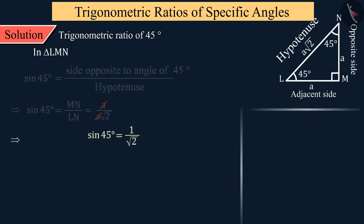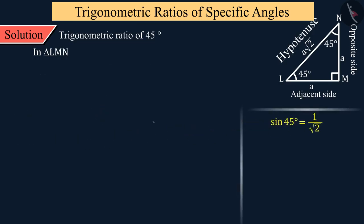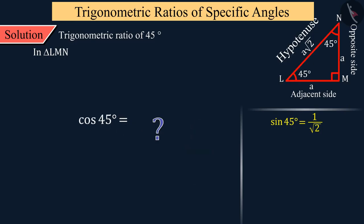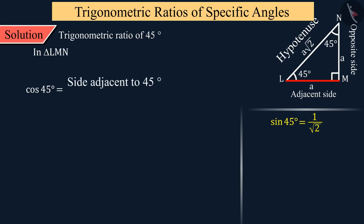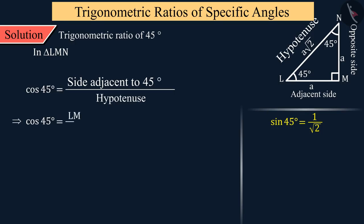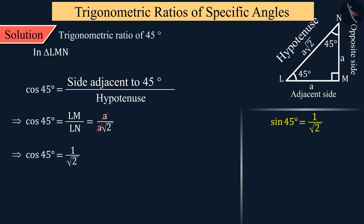Can you tell me what will be the value of cos 45 degrees? For this, find the ratio of the adjacent side to the hypotenuse for angle L. On solving this, the value of cos 45 degrees is also given as 1/√2.